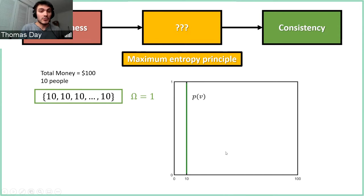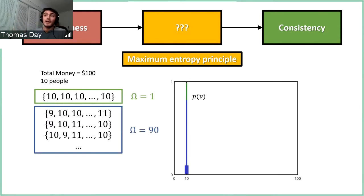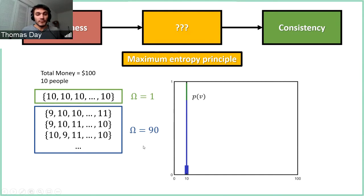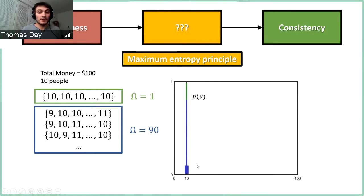But that isn't the only way. I could give nine dollars to one person, eleven to another, and ten to the remaining eight — there are actually 90 ways to do this. If we plot the probability distribution restricted to this blue class, there's an 80% chance of getting $10, a 10% chance of getting $9, and a 10% chance of getting $11.